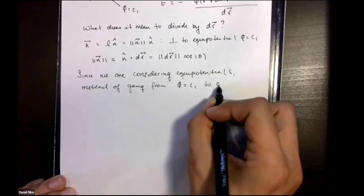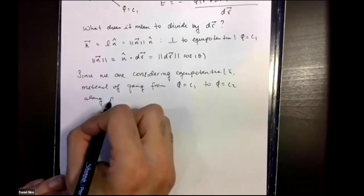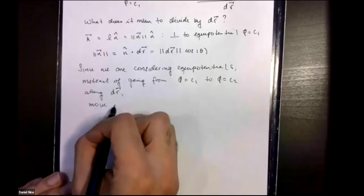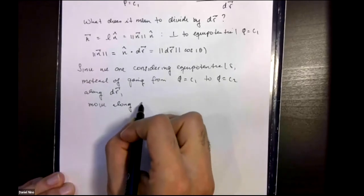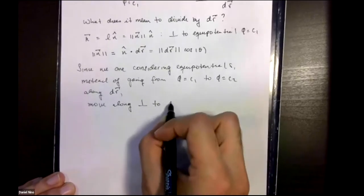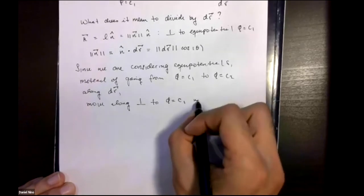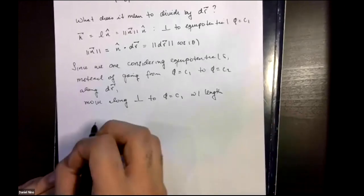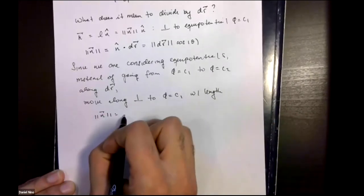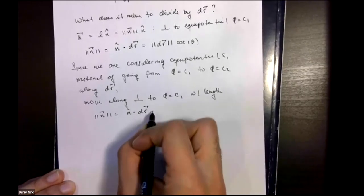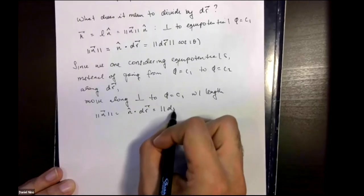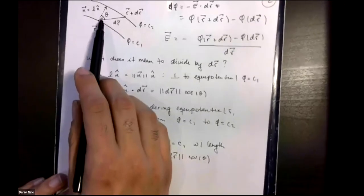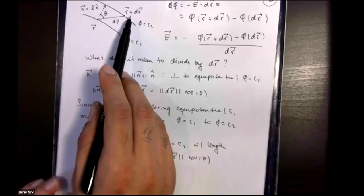So instead of going from one equipotential to the other along our original trajectory dr, we're going to move along the path perpendicular to c1, which has length given by the dot product expression we derived. Remember, theta is the angle between our new perpendicular path and our original path between the equipotentials.